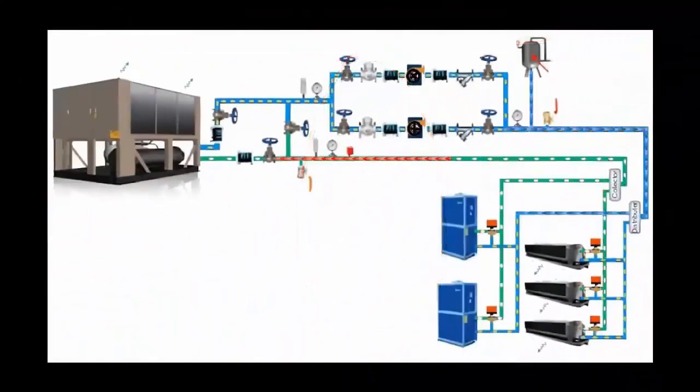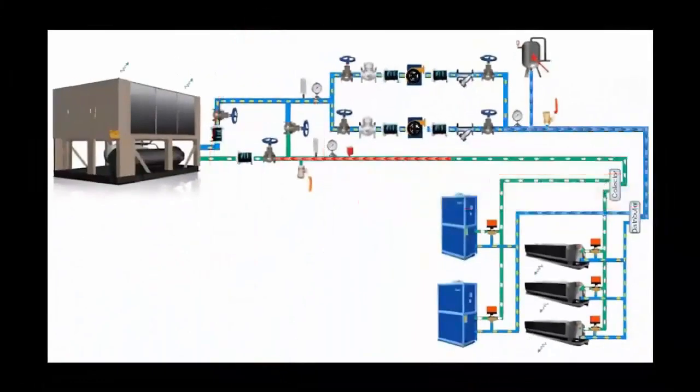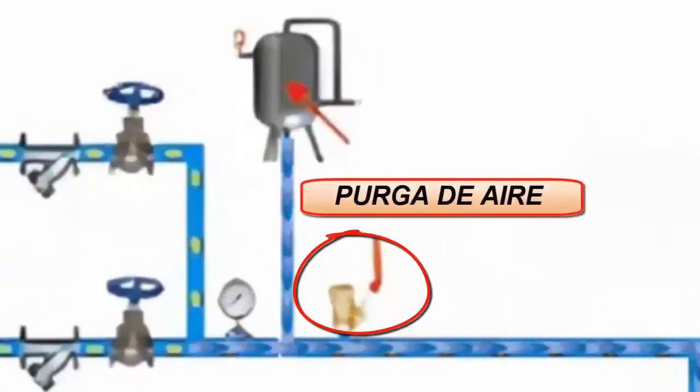8. Centrifugal pumps circulate the water within the circuit. 9. The check valve allows the passage of water in only one direction.